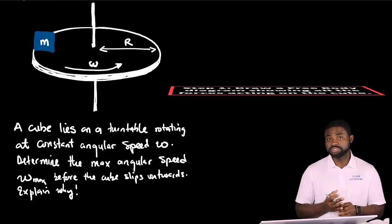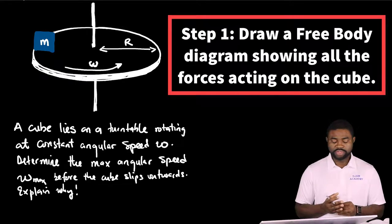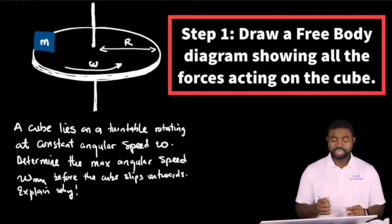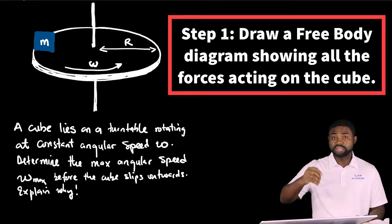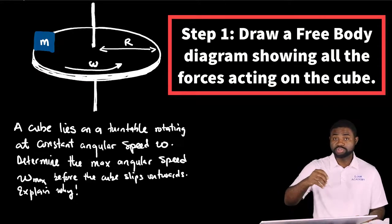Now for you to be able to see exactly why, we have to start first by drawing our free body diagram. Now the cube is rotating in a circle and therefore it is performing circular motion.